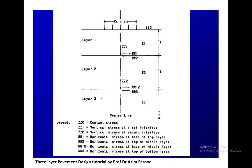Z1 and Z2 are basically the influence factors for the vertical stresses in the three-layer system. We will determine the value of K later on. For now, understand that H1 is the depth or thickness, E1, E2, and R are the Young's moduli. We can determine ZZ1 at the first interface and ZZ2 at the second interface, as well as the horizontal radial stresses nominated as RR1.